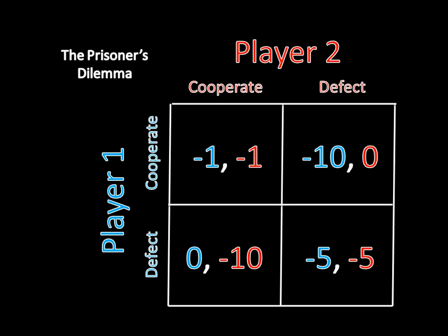We can condense all this information into the matrix on your screen. By convention, the rows always reflect player one's moves and the columns always reflect player two's moves. Meanwhile, the first number in each cell corresponds with player one's payoff, while the second is for player two.